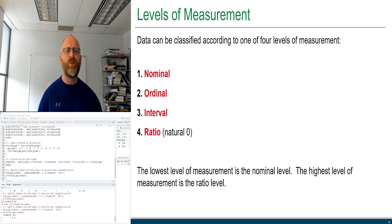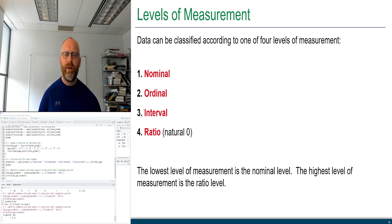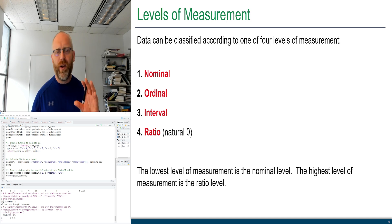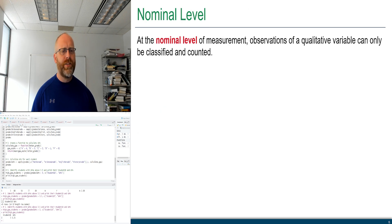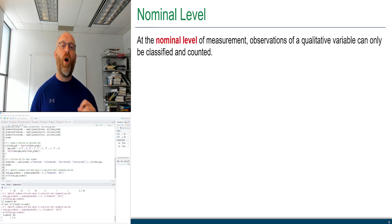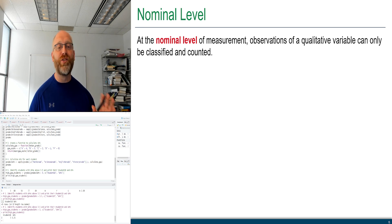Data can be classified according to four levels of measurement: nominal, ordinal, interval, and ratio — from lowest to highest. At the nominal level, observations of a qualitative variable can only be classified and counted. There is no order. Properties: the variable is divided into categories, and there is no natural order to the outcomes. Example: color of M&Ms — you can group and count colors, but one color is not greater than another.